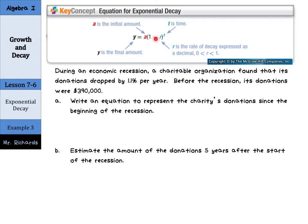So our example, during an economic recession, a charitable organization found that its donations dropped by 1.1% per year. Before the recession, its donations were $390,000. So our first step is to write an equation to represent the charity's donations since the beginning of the recession.